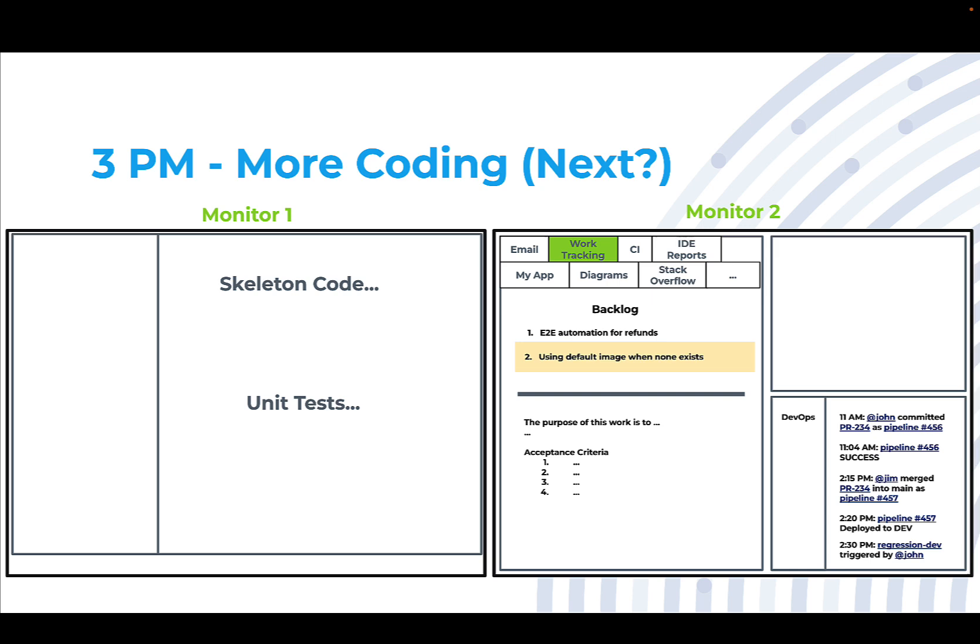And so what I'll do is I'll make an assumption, for example, in the current get image function, if the image is null, I want to return this default image from this URL. And so I'll actually write that out as a test case.